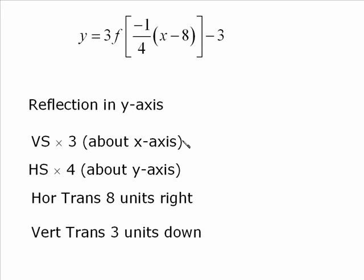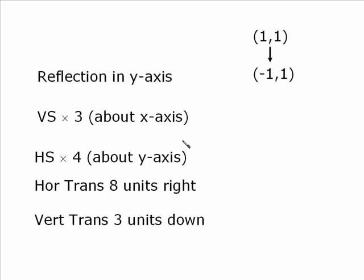We'll walk our way through reflections, then stretches, then translations. We take that point 1 comma 1. When we reflect it in the y-axis, important to remember, because you have replaced x with negative x, only the x-coordinate is affected. So therefore negative 1 comma 1.